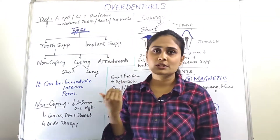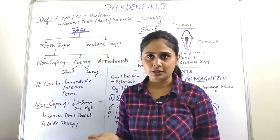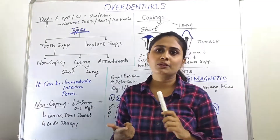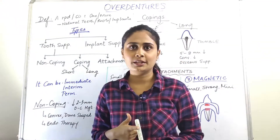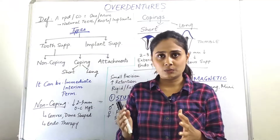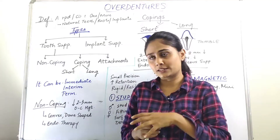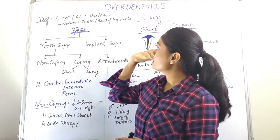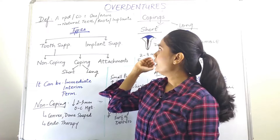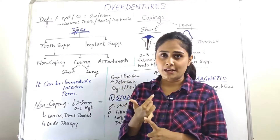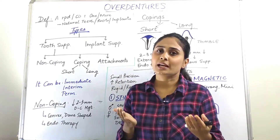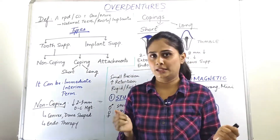In overdentures, we will first see about the definition. It is a RPD or a CD — it can be a removable partial denture or a complete denture — which covers or rests on one or more teeth. This can be natural teeth, roots of natural teeth, or dental implants.